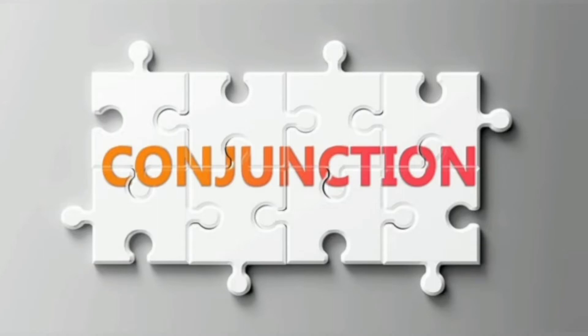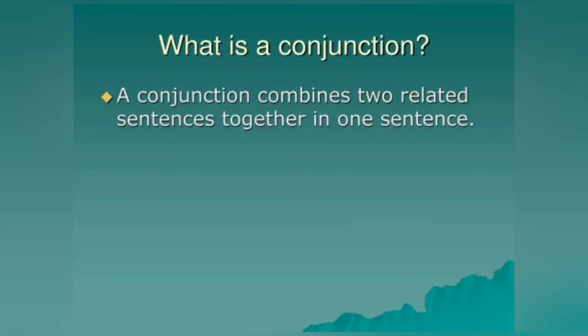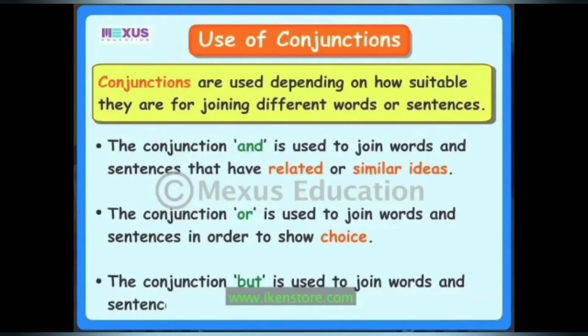So friends, let us see — a conjunction combines two related sentences together in one sentence. It is combining two sentences or words. Use of conjunction: depending on the context, they are for joining different words or sentences. Some words are given here, you can see in the picture.